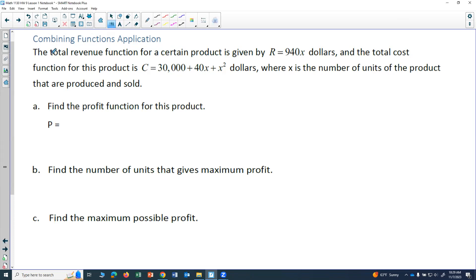We're told that the total revenue function for a certain product is given by R = 940x dollars. The total cost for this product is C = 30,000 + 40x + x² dollars, where x is the number of units of the product that are produced and sold. So that's important to know what your variable is representing.